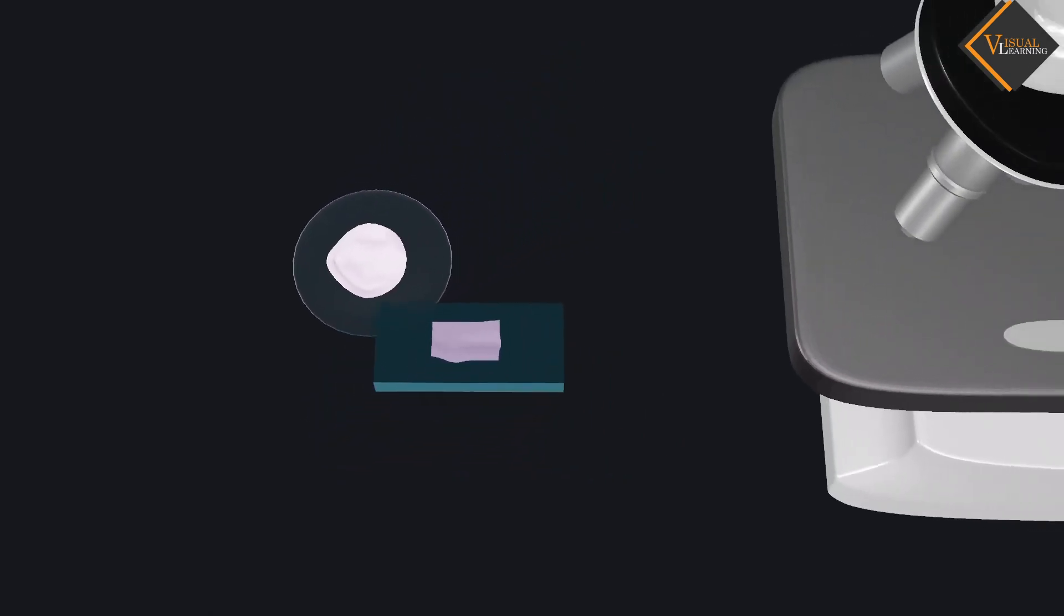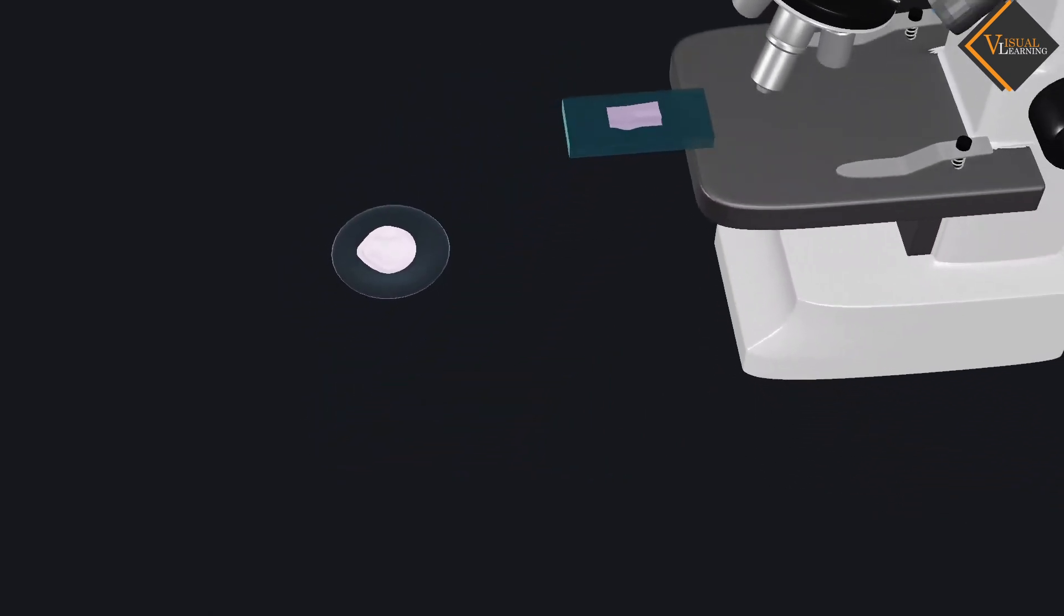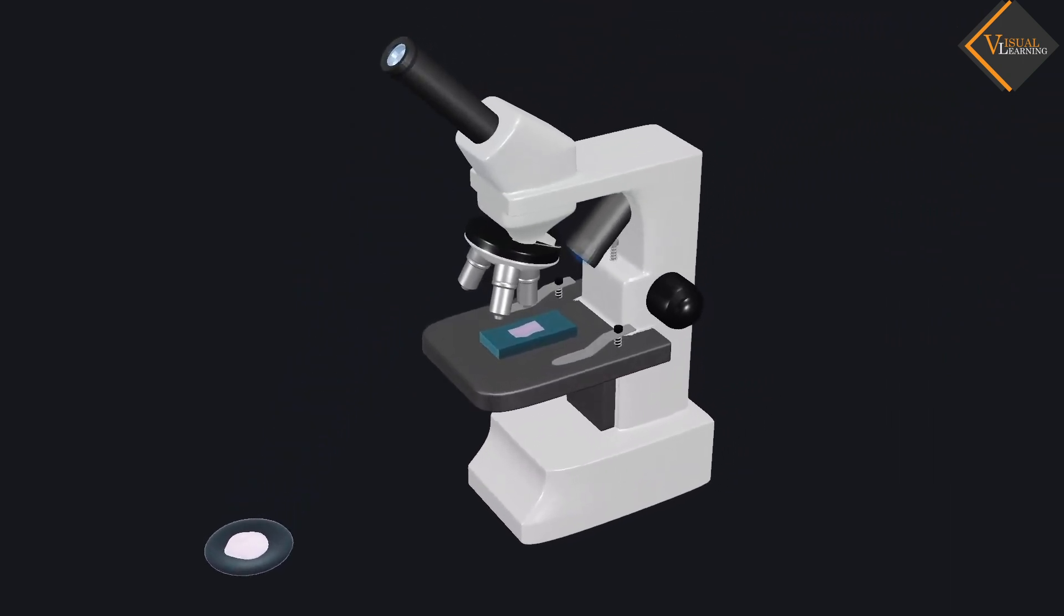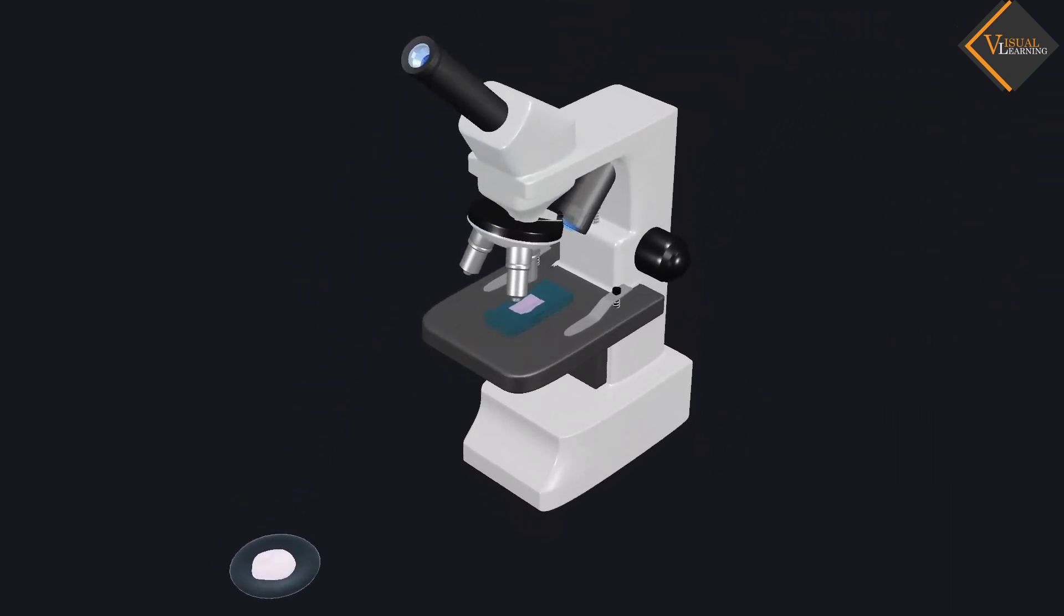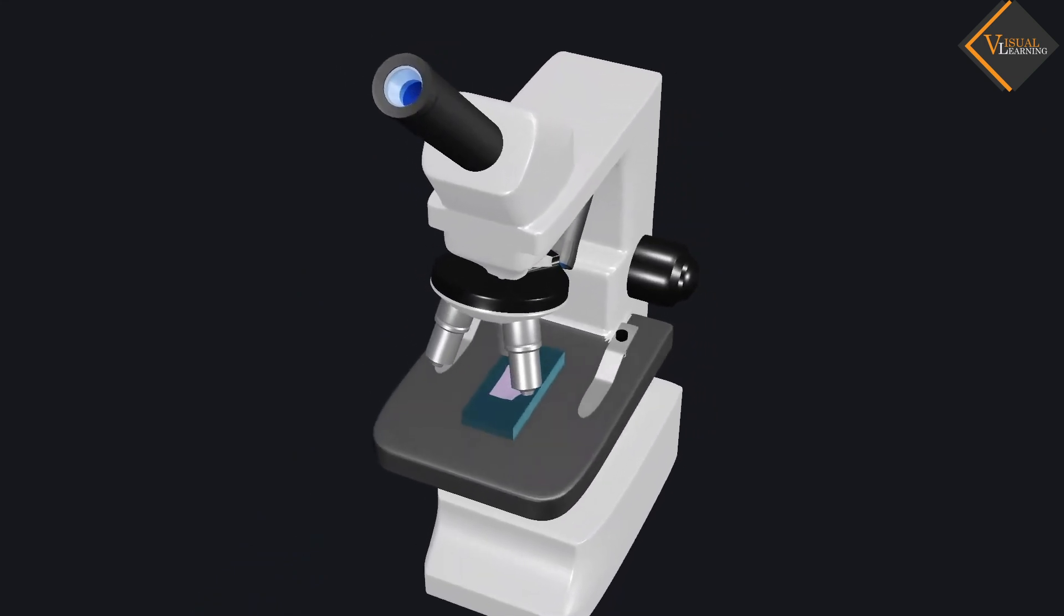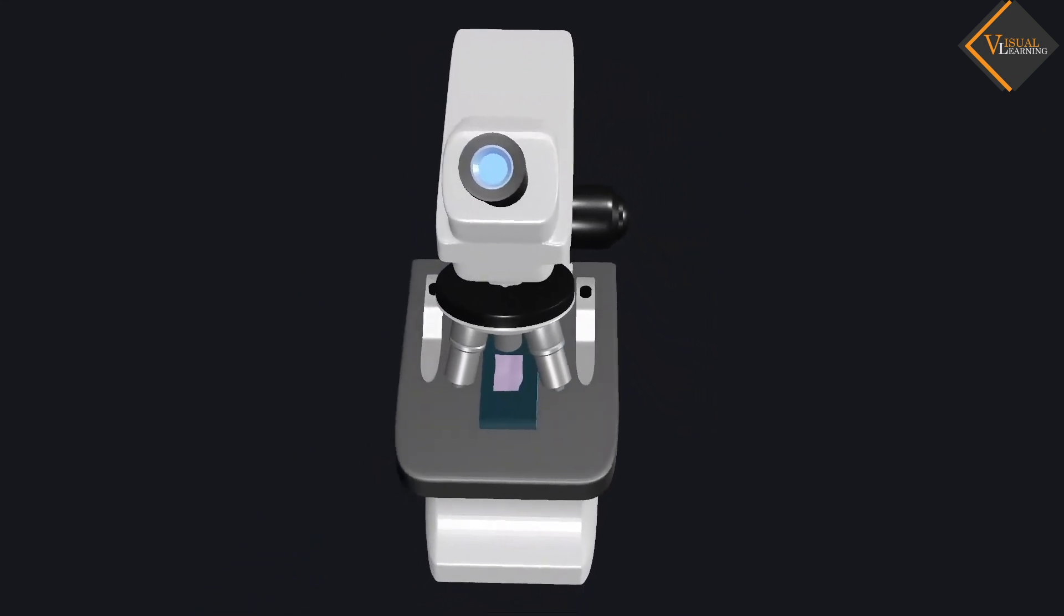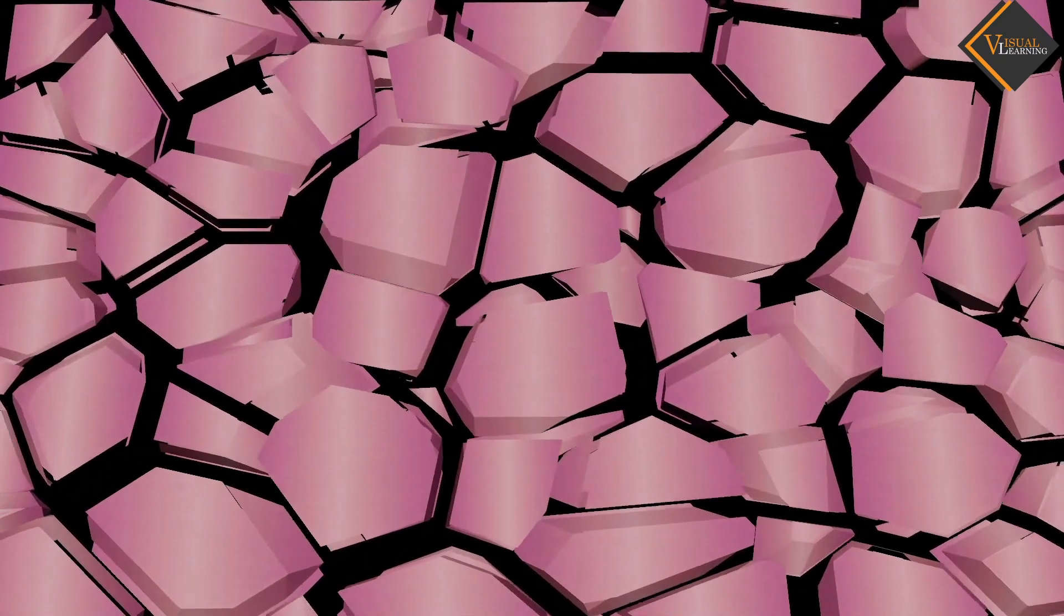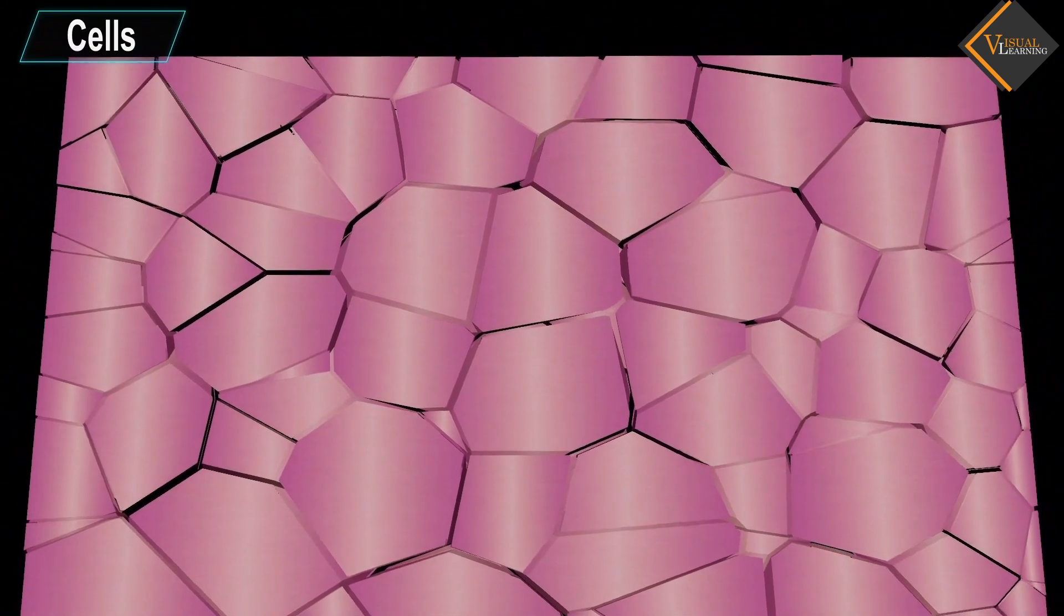We can observe this slide under low power followed by high powers of a compound microscope. What do we observe as we look through the lens? We observe these structures. These structures are called cells.